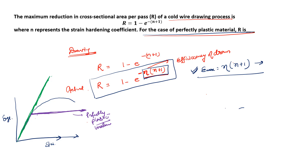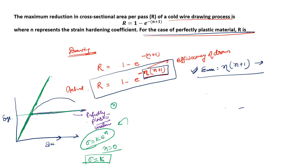The n value corresponds to the strain hardening coefficient. We know sigma = k * epsilon^n. If you put n = 0, then sigma becomes equal to some constant k. This equation is valid in the plastic region, and sigma = k means it has a fixed constant value. That's why for a perfectly plastic material, n = 0.